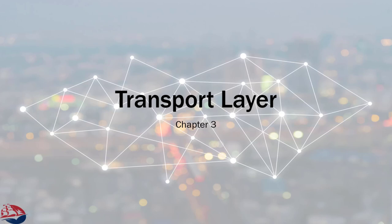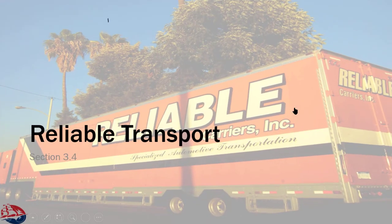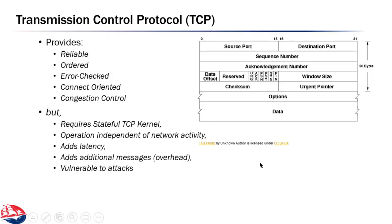Welcome to Computer Networking. This is Chapter 3, Part 2, where we look at reliable transportation. We've started to look at the UDP, or User Datagram Protocol, and we found that it does not provide any level of reliability. It's still a transport protocol, but it doesn't deal with any errors — it leaves that up to the application.